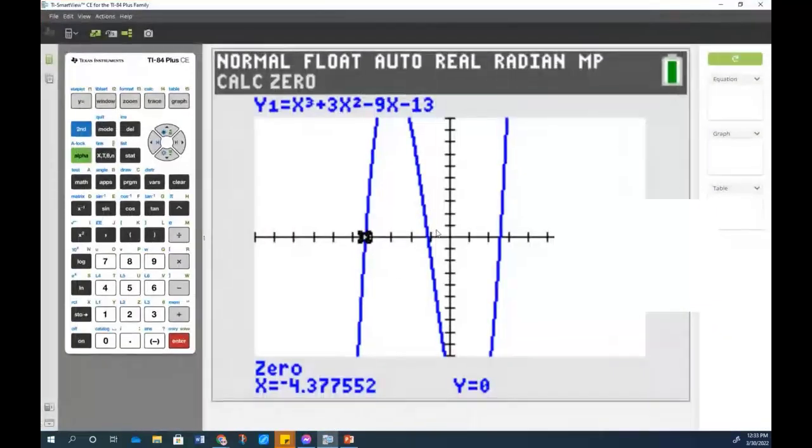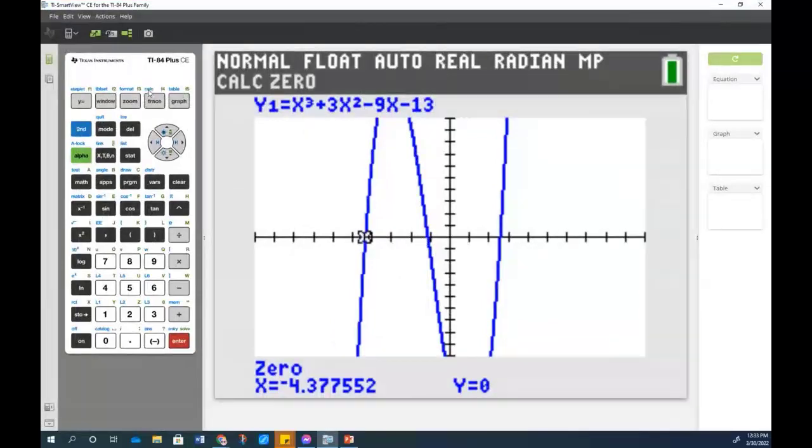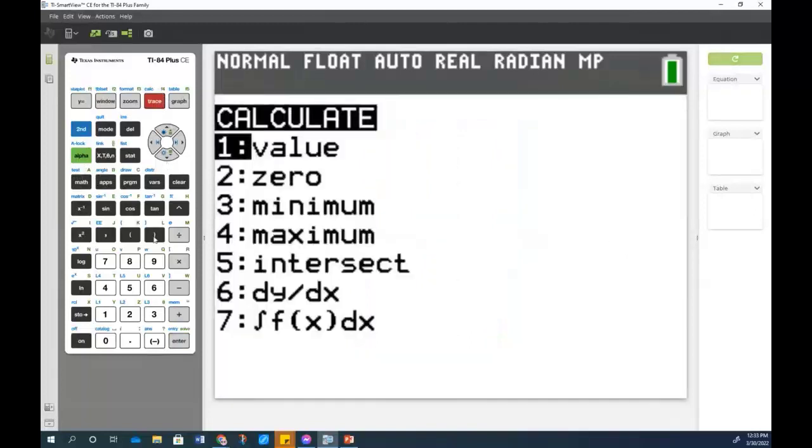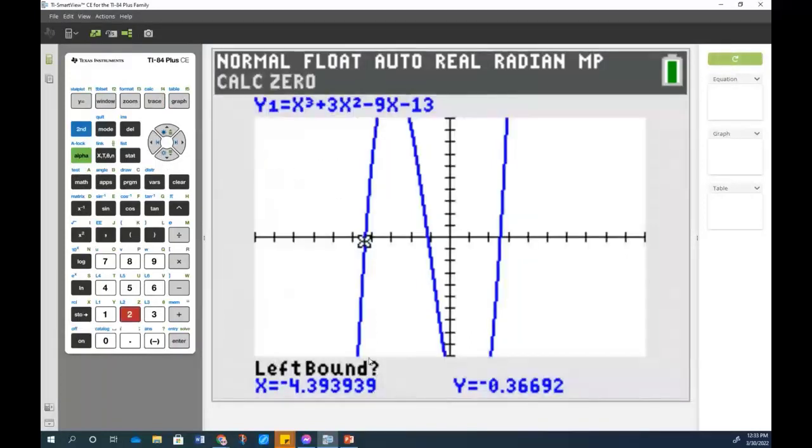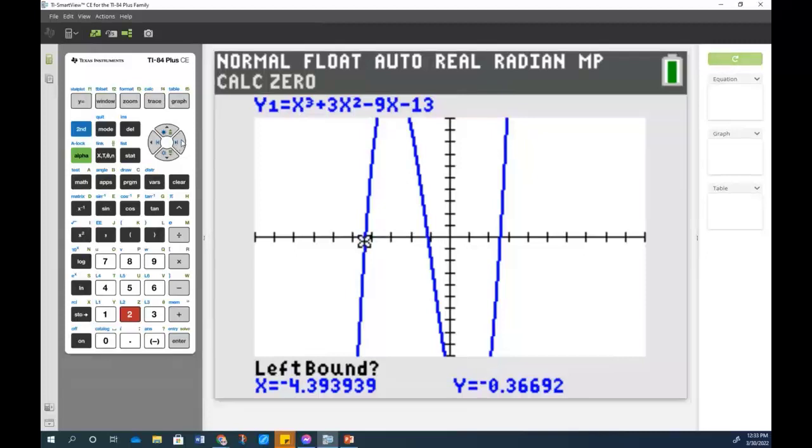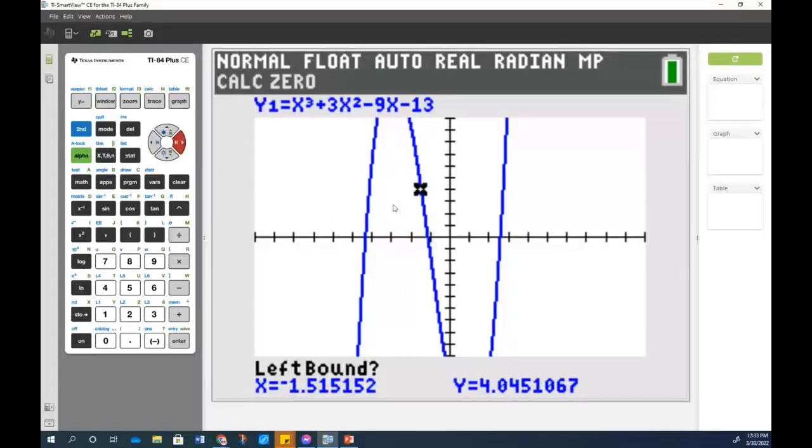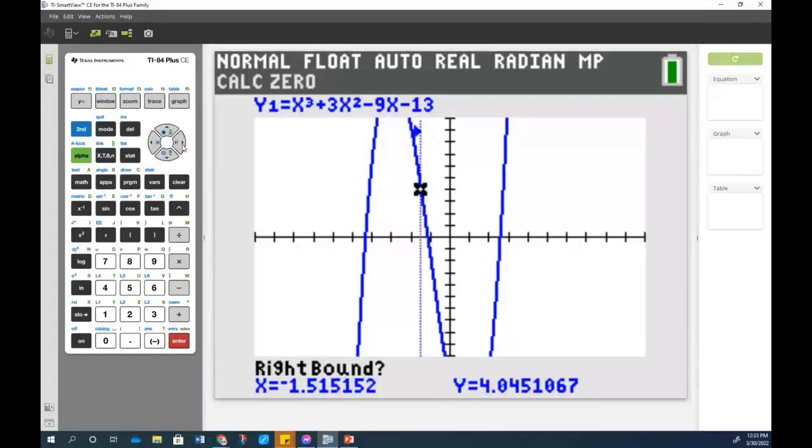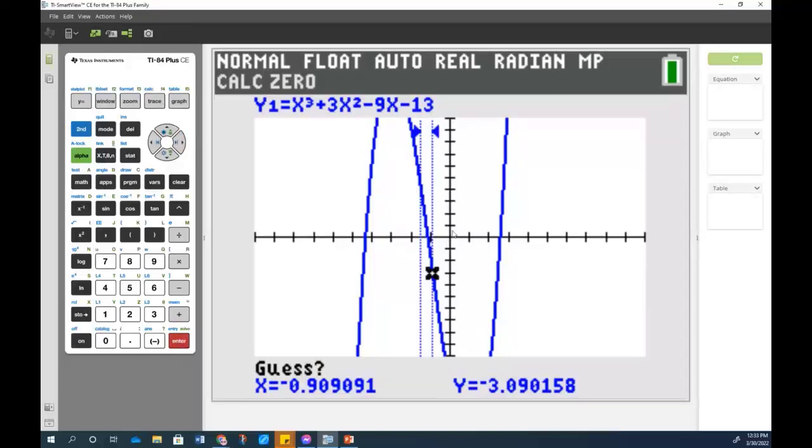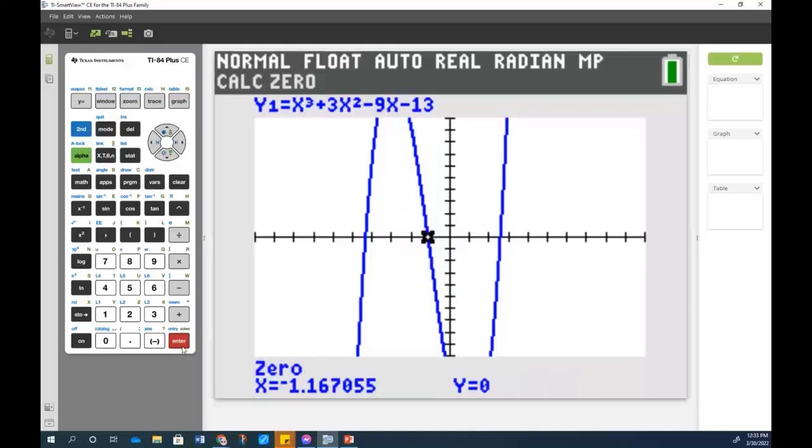So I'm going to repeat this process. You can watch it again. So I need it to calculate. So that is second trace. I want it to calculate a zero. That was option two. It gives me a left bound, but I am to the left of the one I want, but you don't want to be way over. You want to be fairly close, but just to the left of what you want. So now I'm above it and I'm to the left of this point that I'm interested in. So I hit enter. And then I get to the right. And what should always happen is when you're looking for a zero, one of them is going to be above the line and one of them is going to be below the line in general. So now I've got my two lines. Hit enter. And my next zero is at negative 1.167.